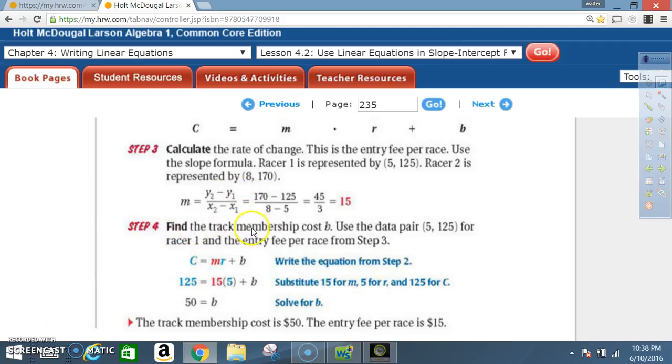Step 4. Find the track membership cost b. Use the data pair 5, 125 for racer 1 and the entry fee per race from step 3. So C equals M times R plus B. Well, we found that M was 15.